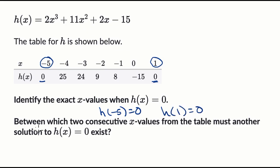Let's do the second part. Between which two consecutive x-values from the table must another solution to h(x) = 0 exist? Pause this video and have another go at it.